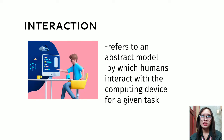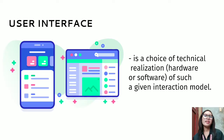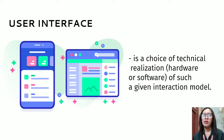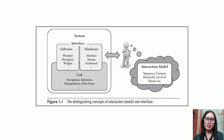Interaction is a concept to be distinguished from the similar term interface. Interaction refers to an abstract model by which humans interact with a computer device for a given task, while the interface is the choice of technical realization — hardware or software — of such a given interaction model. So we can say the 'I' in HCI refers to both interaction and interface, encompassing the abstract model and the technological methodology.